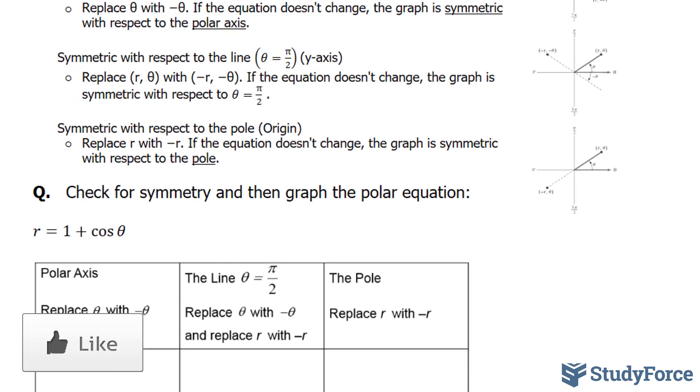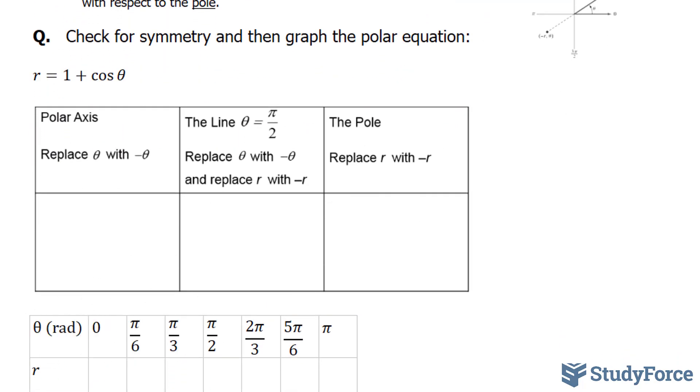Let's continue with the question. Check for symmetry and then graph the polar equation. Our equation is r equals 1 plus cosine theta. Starting with the polar axis, I'll replace theta with negative theta. So I have r equals 1 plus cosine negative theta.